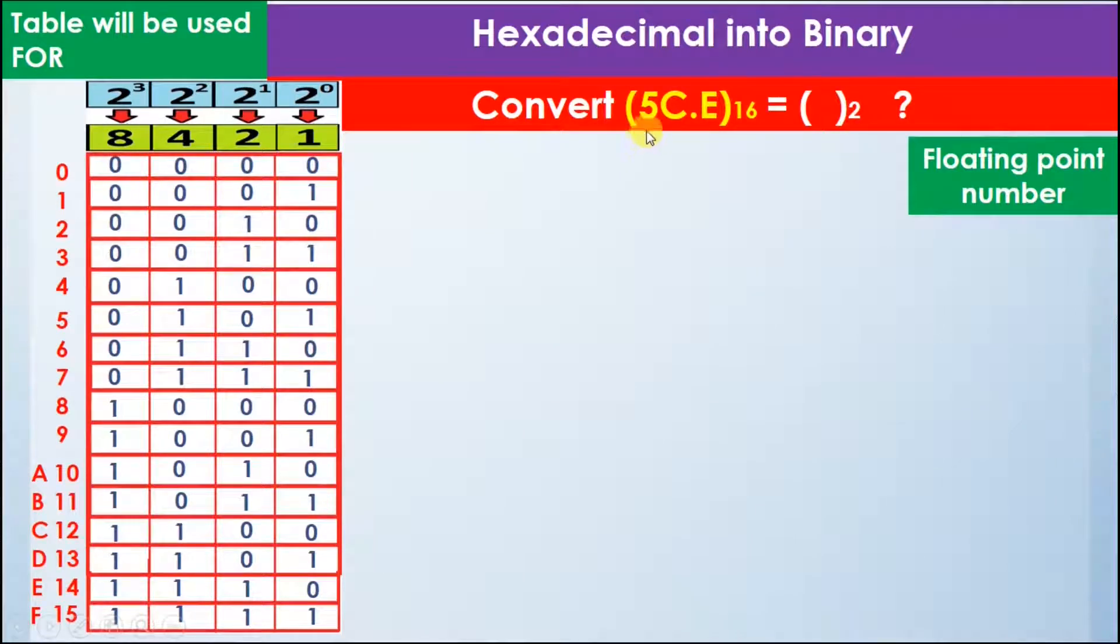Here the number given is 5C.E in hexadecimal and we have to convert it into binary. We know that 2 raised to power 4 is equal to 16, so we have the table that has 16 rows and 4 columns.